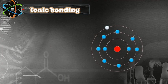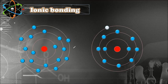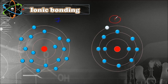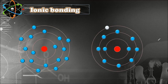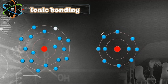Now here we have a sodium atom and a chlorine atom. The chlorine atom has seven valence electrons and the sodium atom has one valence electron, so sodium needs to lose one and chlorine needs to gain one.